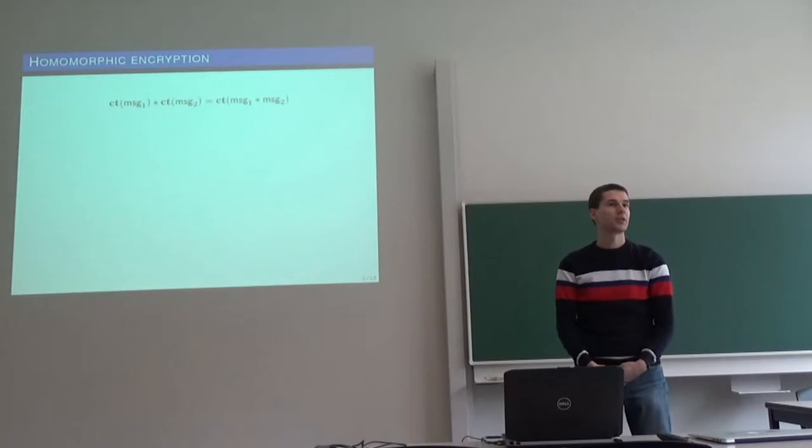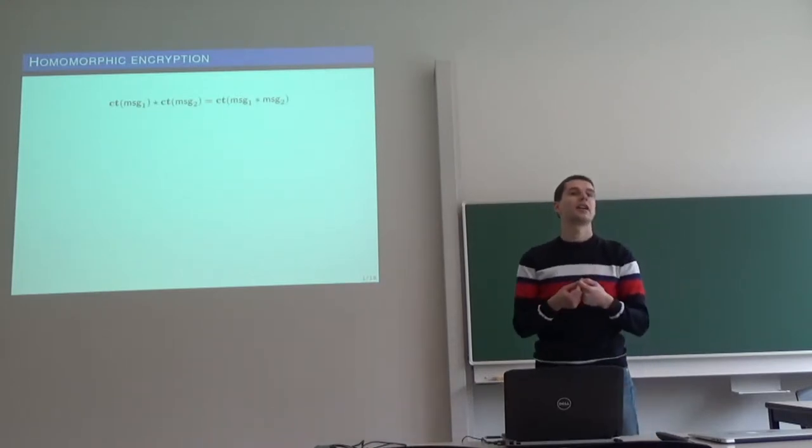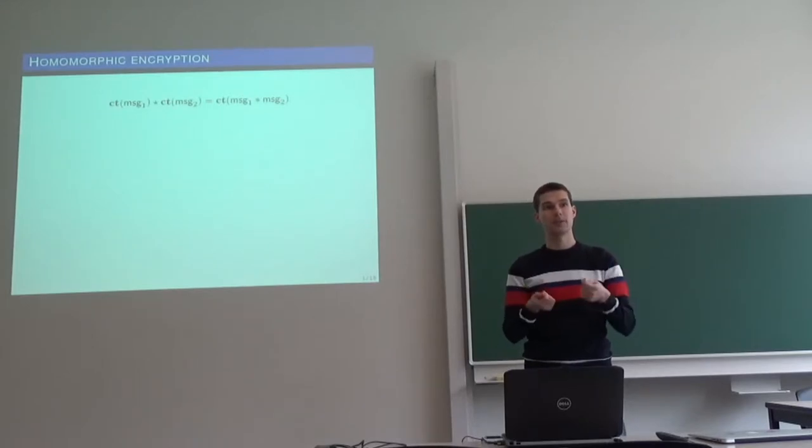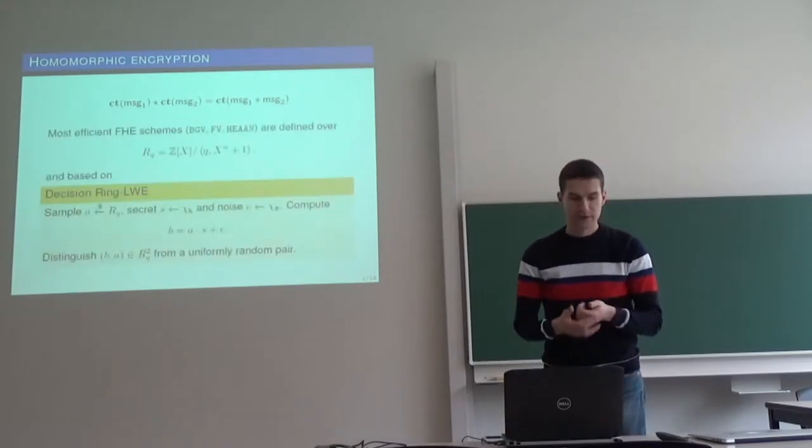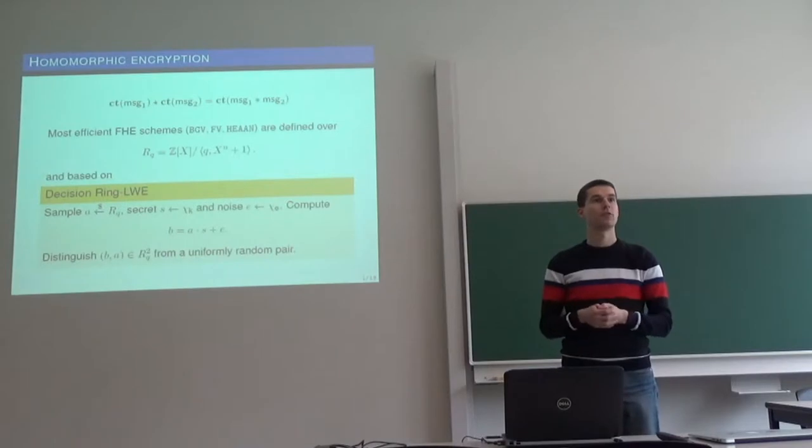Homomorphic encryption is a family of encryption schemes which allow computations on encrypted messages without decrypting them. For example, we can multiply two ciphertexts, and as a result we get the ciphertext which encrypts the product of underlying messages. The most efficient schemes use the following polynomial rings to be defined. These rings are of integer polynomials, modulo some big integer q, and some 2^n cyclotomic polynomial, x to the n plus 1.